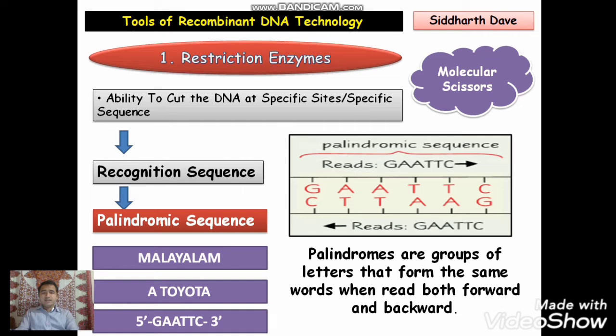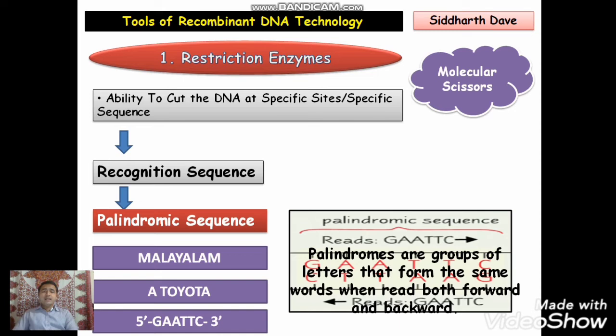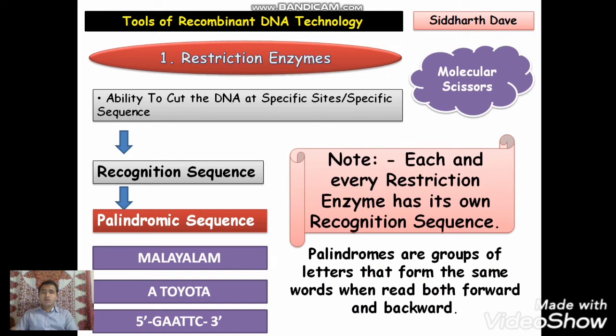अगर आप देख सकते हो इस figure में — the upper series is 5' GAATTC, and if you read the lower strand from the right-hand side, वो भी GAA TTC दिखाई देगी. Upper side GAA TTC, lower side GAA TTC. As you know, cytosine always pairs with guanine and thymine always pairs with adenine. This is a complementary sequence, so this is a kind of palindromic sequence — as already given in your NCERT textbook. Each and every restriction enzyme has its own recognition sequence; they are specific in their activity.